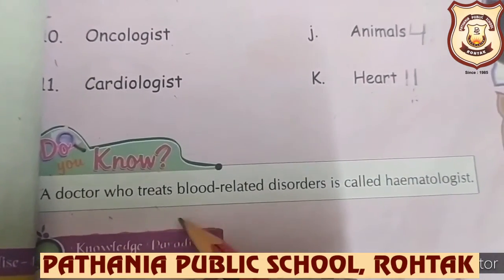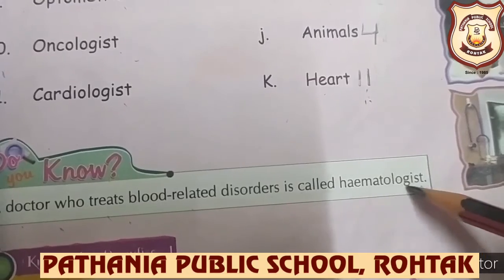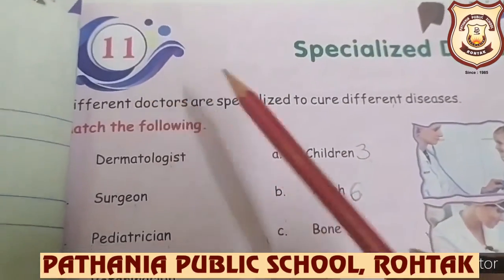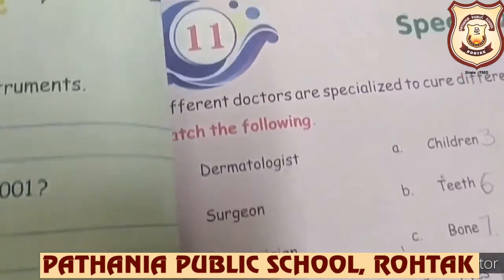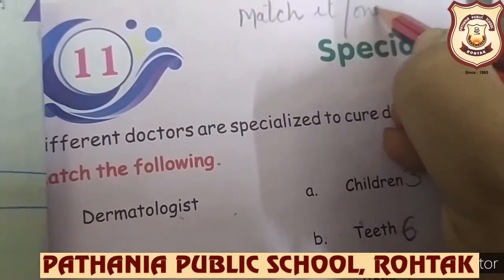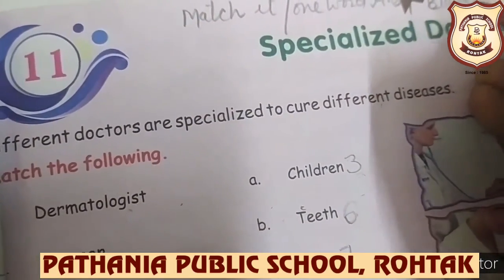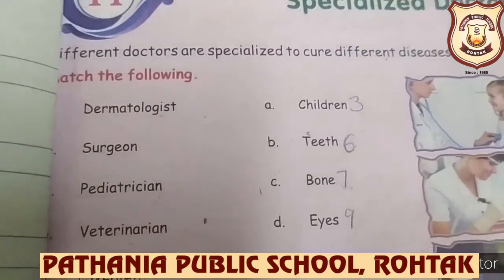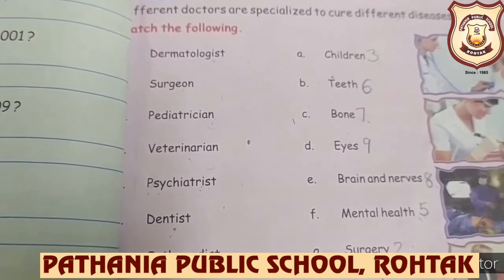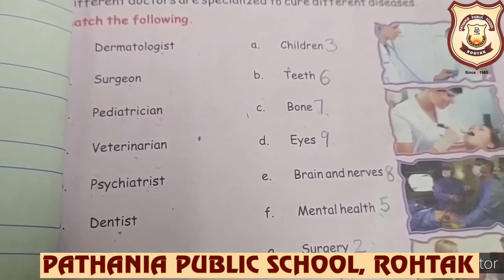Also, a doctor who treats blood-related disorders is called a Hematologist — keep this word in mind too. So children, do this chapter carefully and learn all the names. This chapter can come in match-the-following format, one-word answers, or fill-in-the-blanks. Doctors play a major role in our life. That's all for today — have a wonderful time, bye!